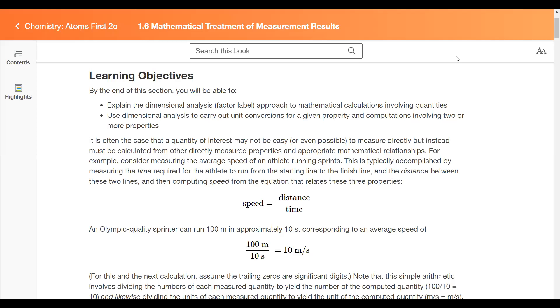In section 1.6 we're looking at the mathematical treatment of measurement results. Remember a measurement has a quantity and some unit as well as an uncertainty. We're going to focus on the first two parts and how we can use this idea of dimensional analysis to approach calculations for these quantities. We're going to explain the dimensional analysis approach and learn how to use this to carry out unit conversions for a given property and computations involving two or more properties.